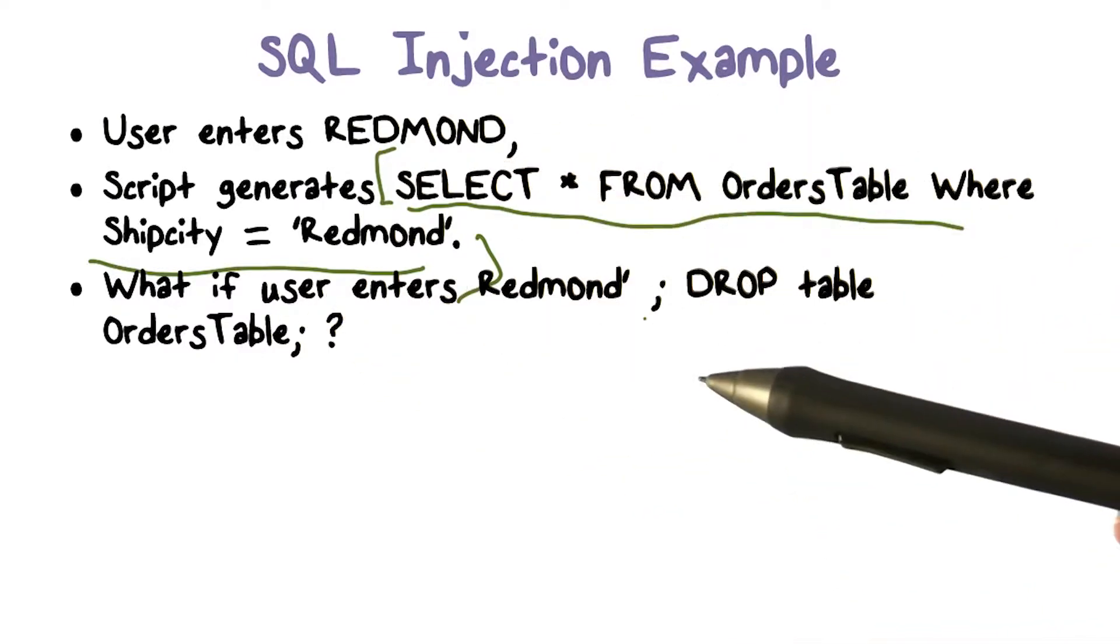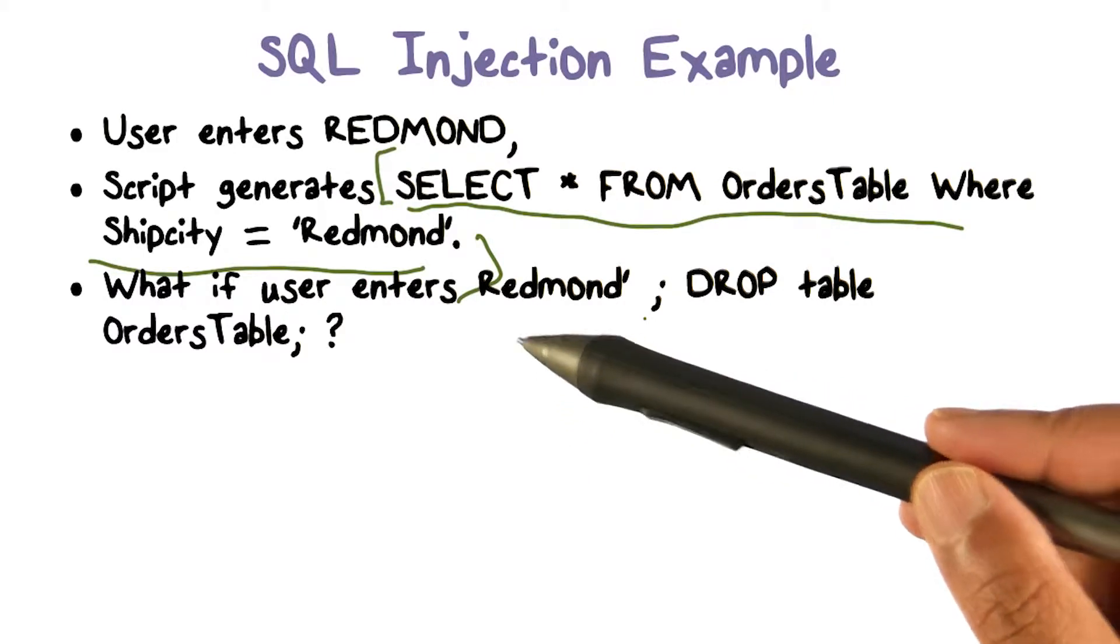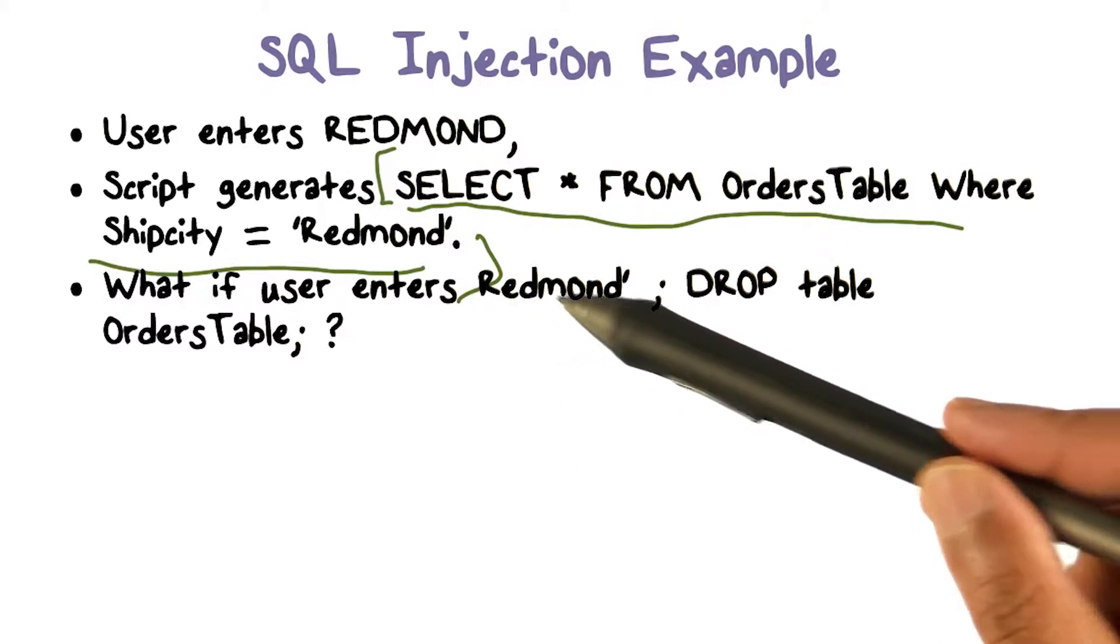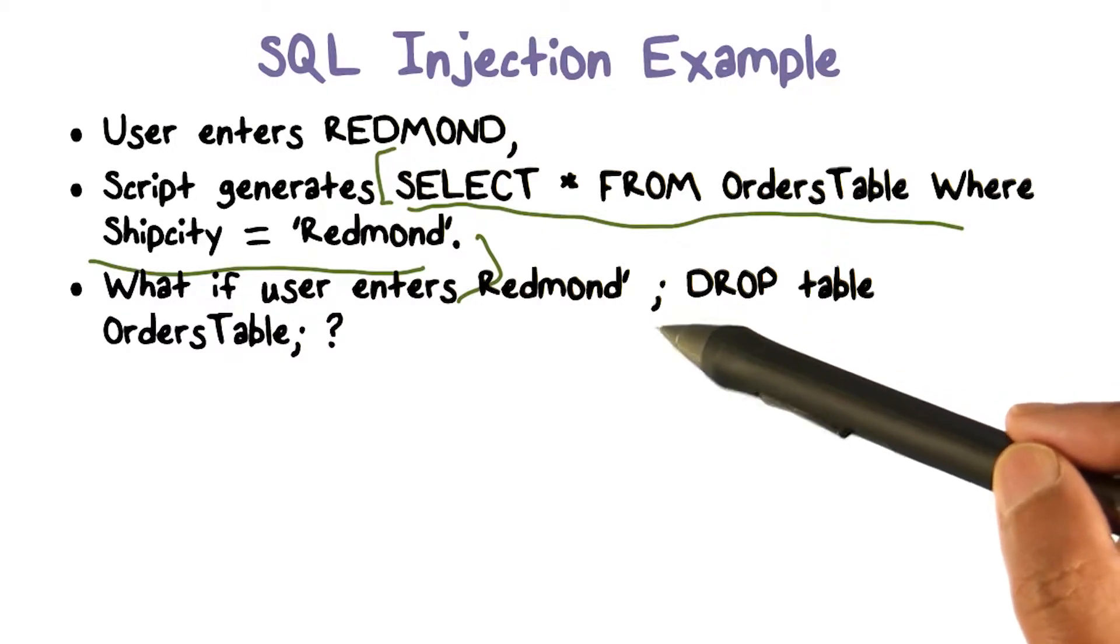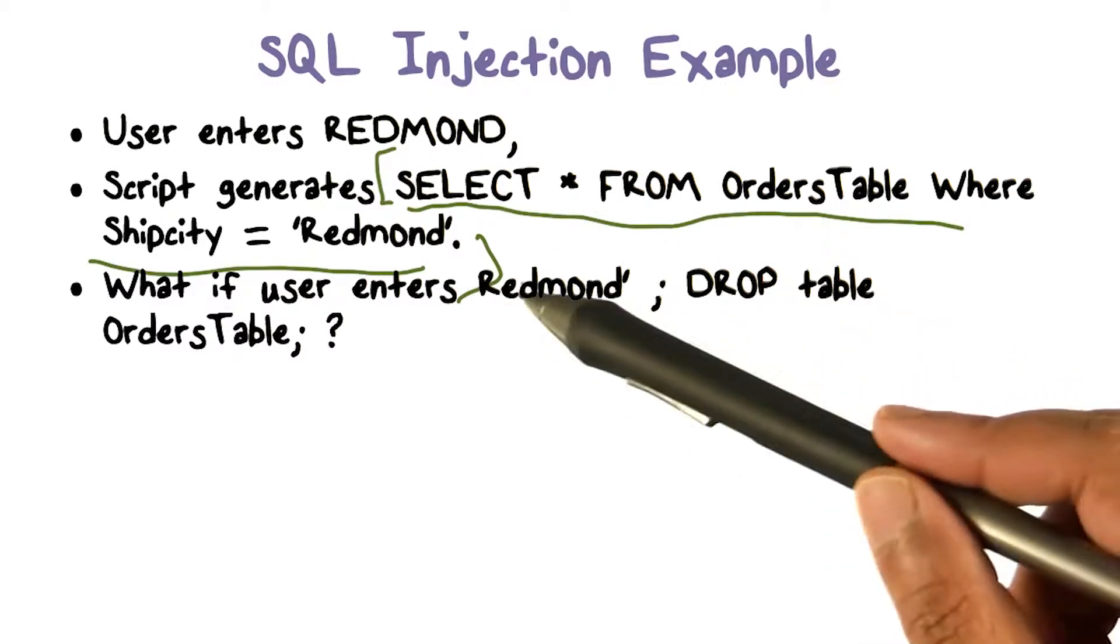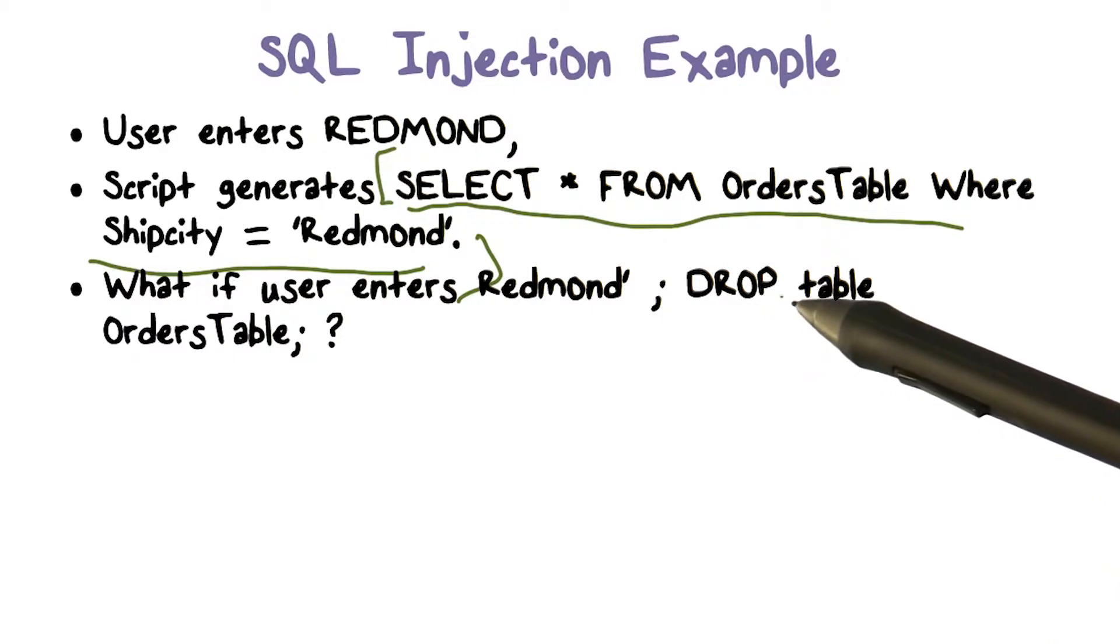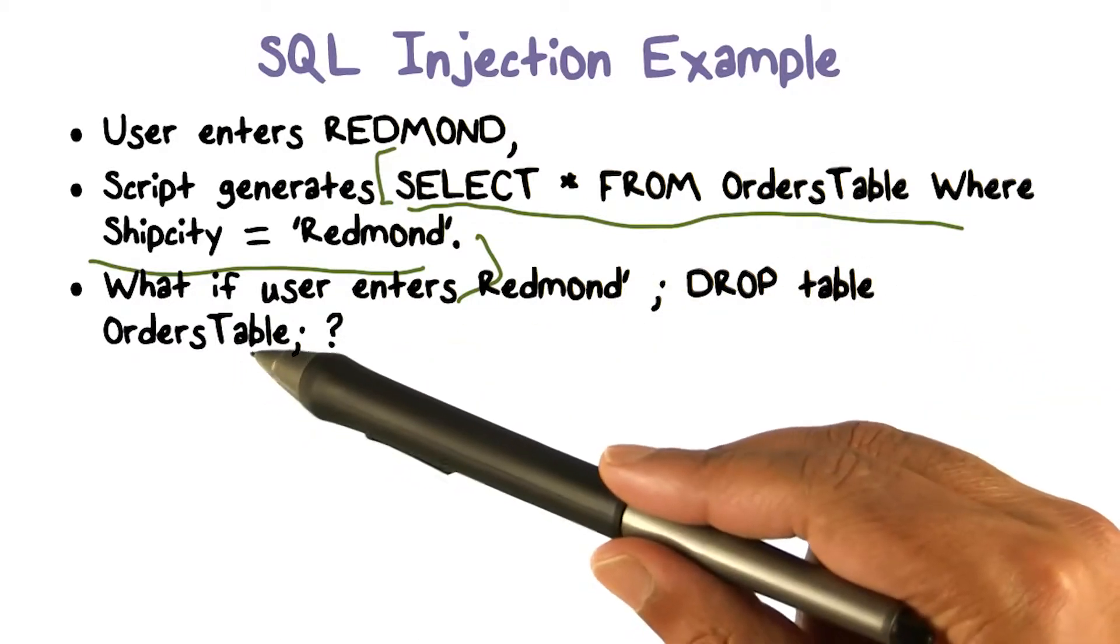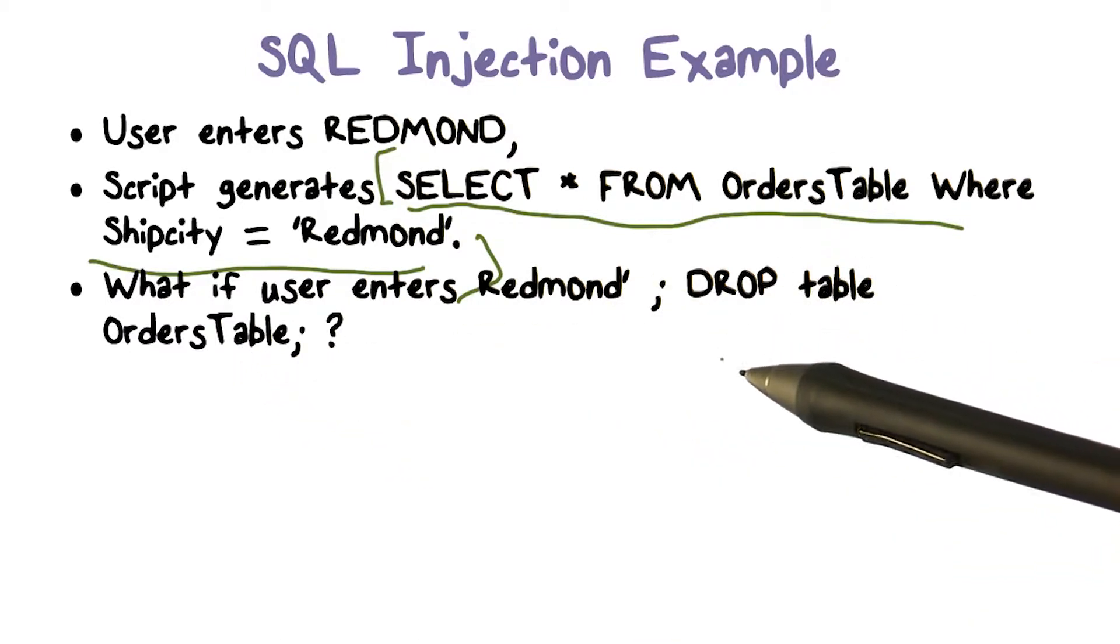What if they entered this whole thing? So before we look at this, maybe a little bit of SQL here. Semicolon separates statements, so this statement will end here. And the next statement is DROP table OrdersTable, and DROP results in basically, assuming that you have access to do that, deletion of this particular table.